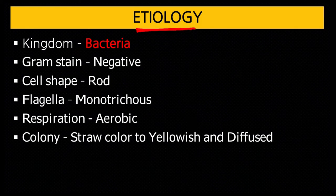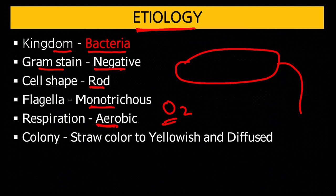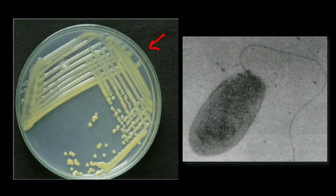Regarding the etiology of the bacterium: it belongs to the bacteria kingdom, is gram-negative, with a rod-shaped cell. It has a single monotrichous flagellum. Respiration is aerobic — it requires oxygen to survive. Colonies are cream or yellow colored and diffused. The colony appears spread out because the bacterium secretes mucus, which makes the colony look diffused rather than intact.